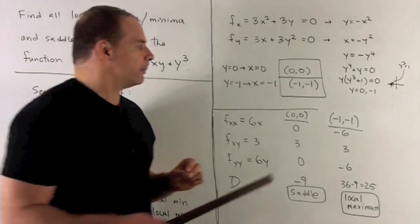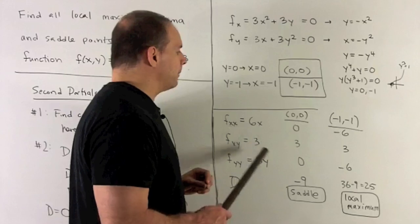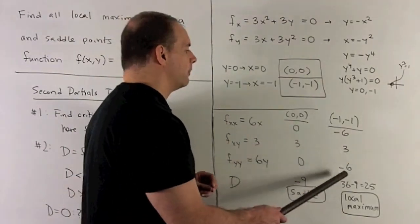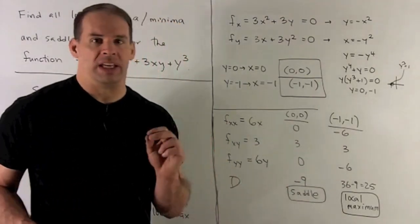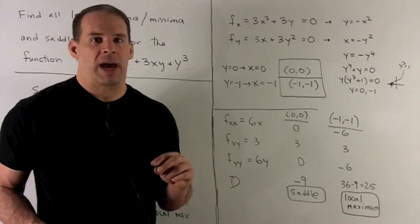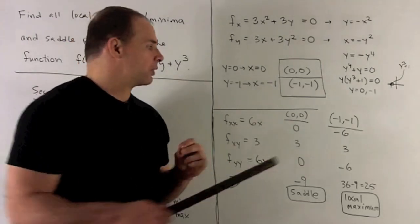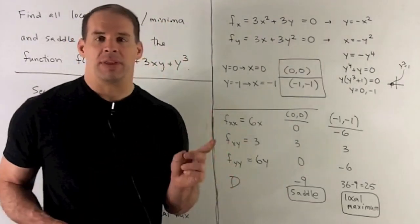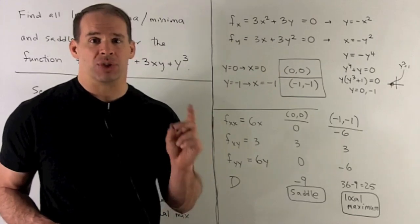Point (-1,-1). Again, we evaluate. So, we get minus 6, 3, minus 6. I compute D. So, I have minus 6 times minus 6 gives me 36 minus 3 squared. That's going to give me 36 minus 9, which is 25.